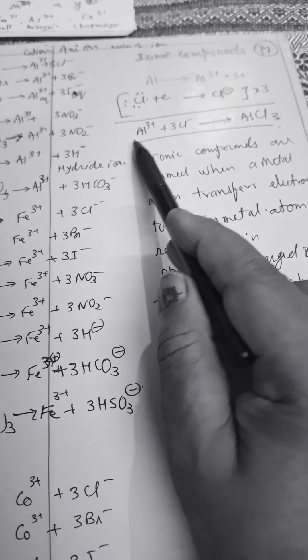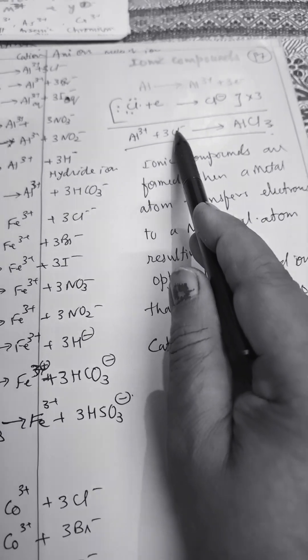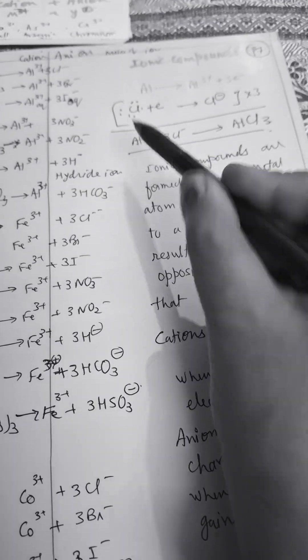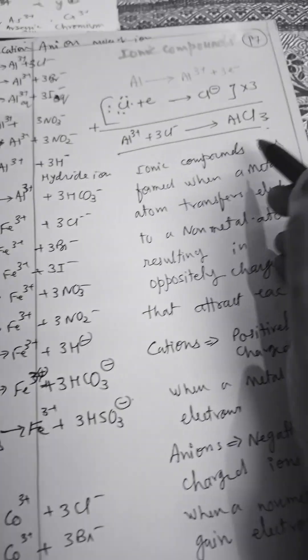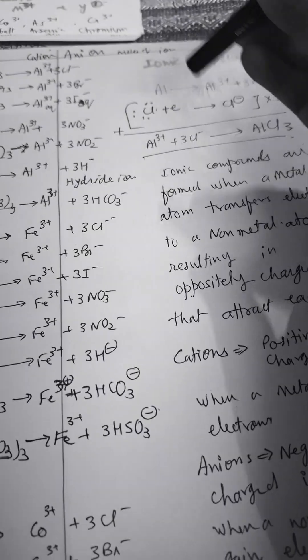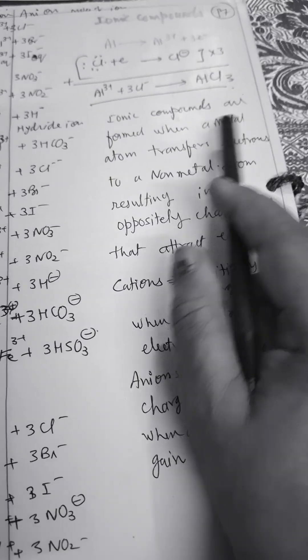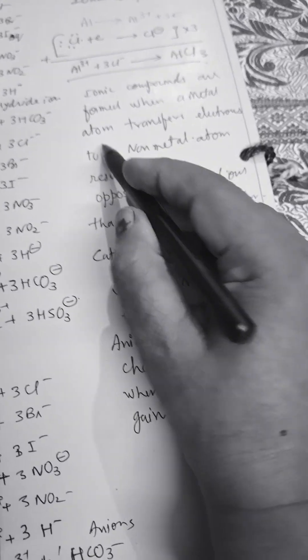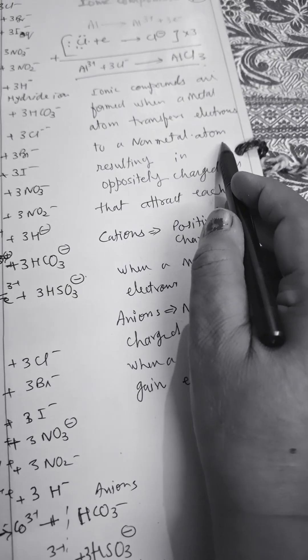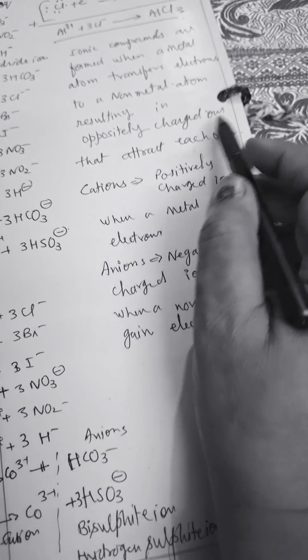The formula will be Al³⁺ plus three Cl⁻. We add up both of them, okay, so we will get AlCl₃. So this is the reactant side and this is the product side. We will get AlCl₃. Ionic compounds are formed when a metal atom transfers electrons to a non-metal atom, resulting in oppositely charged ions that attract each other.